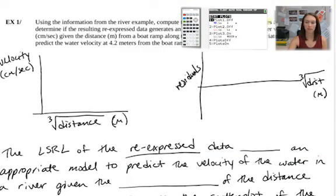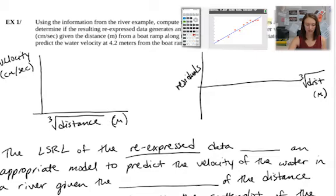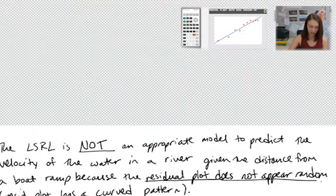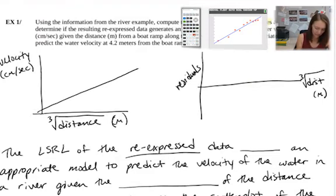Go to second Y equals, turn plot three off, go to plot two and turn it on as a scatter plot. Set the x-list to L3 — the re-expressed x values — then zoom stat. The scatter plot with the re-expressed data still looks reasonably linear, and the points appear constantly spread around the line.